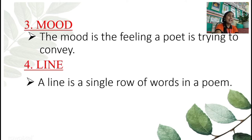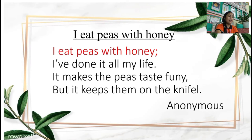Line. A line is a single row of words in a poem — the easiest one. For example: "I eat peas with honey. I've done it all my life. It makes the peas taste funny, but it keeps them on the knife," by anonymous. So the first line, second line, third line, and the fourth line.